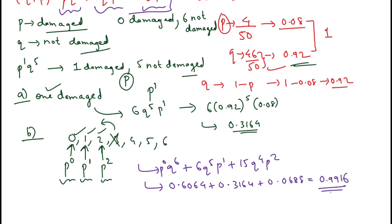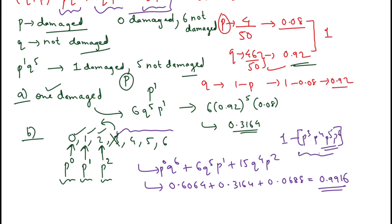So 0.9916 is the final answer for Part B. Alternatively, you can compute 1 minus the sum of the terms with P^3, P^4, P^5, and P^6 — you will get the same answer. You can try that method as well.